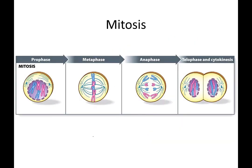A previous student came up with a helpful way to remember the five steps of mitosis using the first letter of each stage. Starting with prophase — P stands for 'prepares' — because during prophase, the cell prepares for the next steps of mitosis: the chromosomes condense, the mitotic spindle forms, and the centrosomes move to opposite poles.